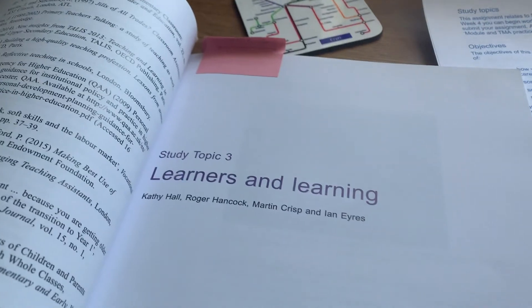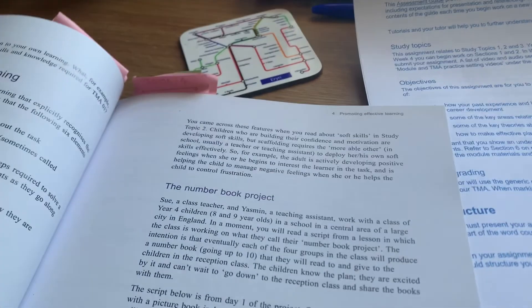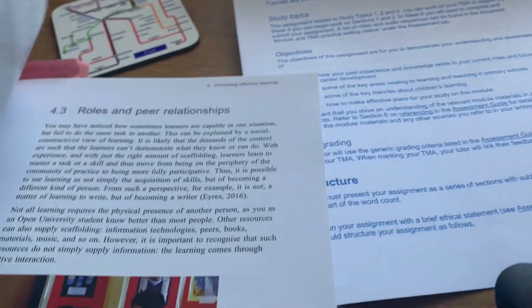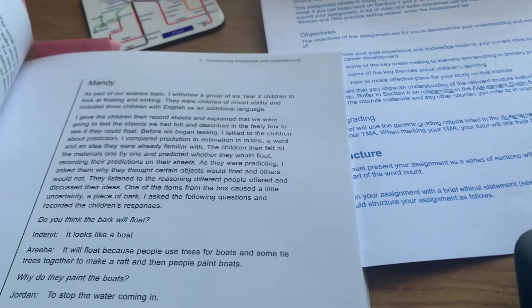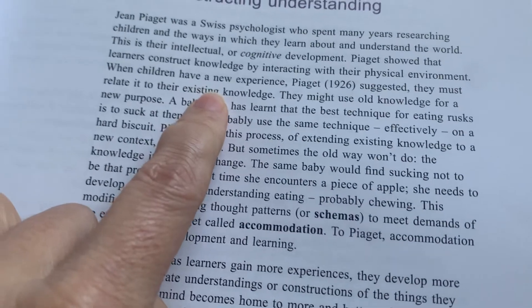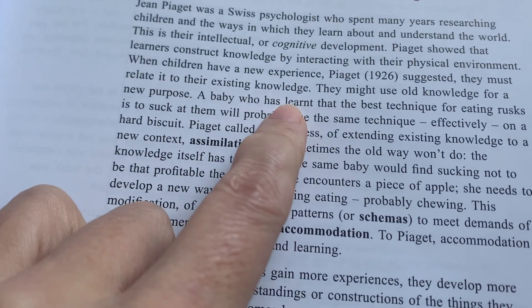I'm looking at study topic three because that's where the information about Piaget is. I'm just going to scan through and find the page that I got that information from. Here we go — here's the page. We've been talking here about Piaget, relating things to children's existing knowledge and using existing information to build on.